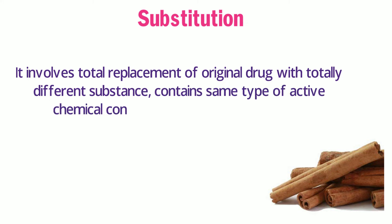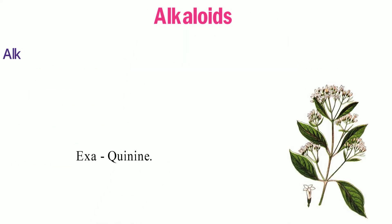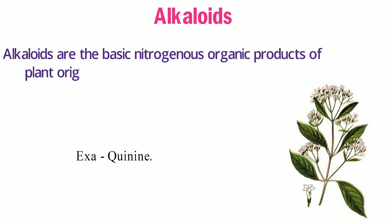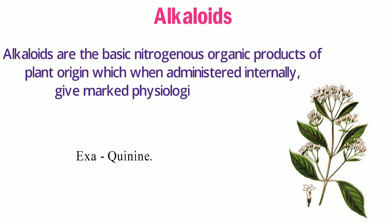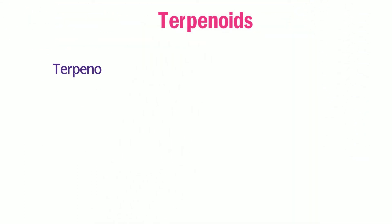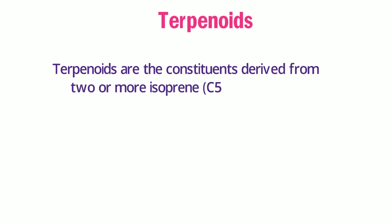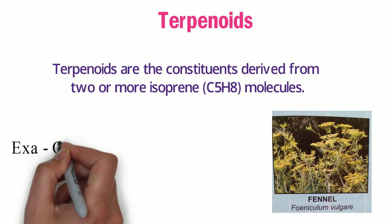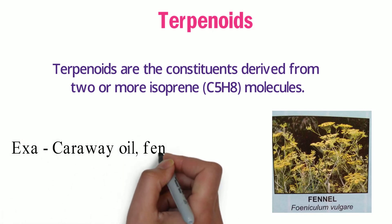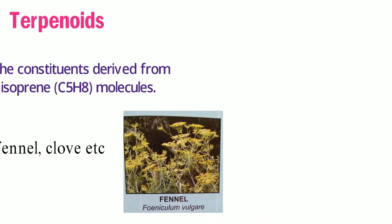Alkaloids are the basic nitrogenous organic products of plant origin which, when administered internally, give marked physiological responses. Terpenoids are the constituents derived from two or more isoprene (C5H8) molecules. Examples include caraway oil, fennel, and clove.